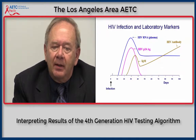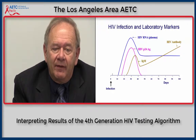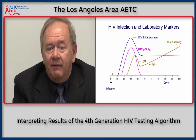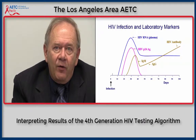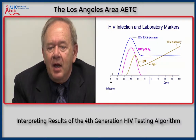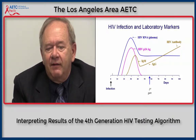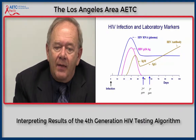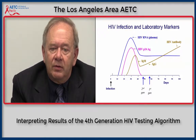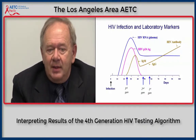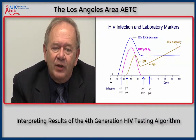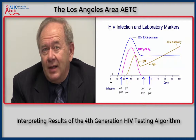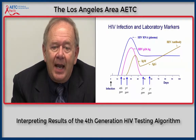IgM antibody is the first to appear at about 21 days after the time of infection, and later IgG antibody shows up at about 42 to 45 days. Therefore, the different generations of assays detect infection at different time periods. The first-generation assay detects infection at approximately 50 to 55 days. The second-generation assay somewhat sooner, at 42 to 45 days. The third-generation assay detects at about 21 to 22 days because of its ability to detect IgM. The fourth-generation combination assay detects infection earliest, at about 15 to 16 days after infection.